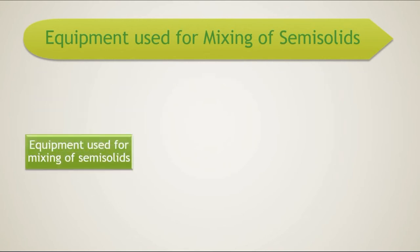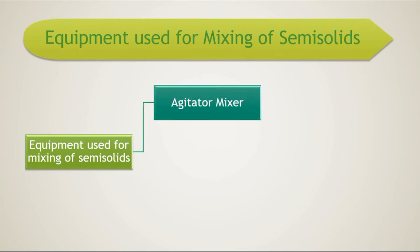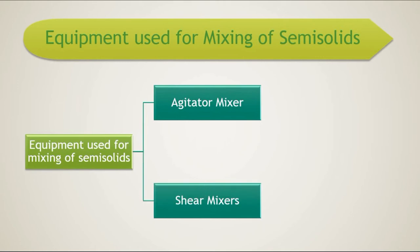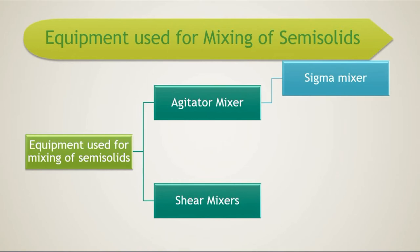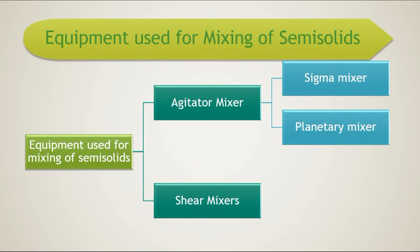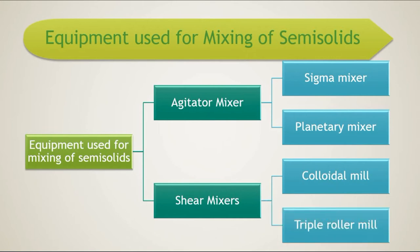For such mixing, various equipments are used which are divided into two types. The first type is agitator mixers and the second type is shear mixers. Examples of agitator mixers are sigma mixer and planetary mixer. Examples of shear mixers are colloidal mill and triple roller mill. We will discuss these mixers one by one.